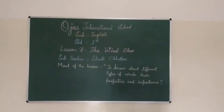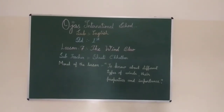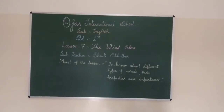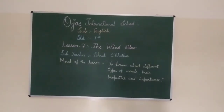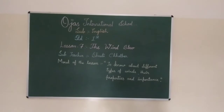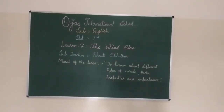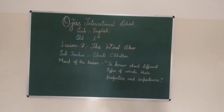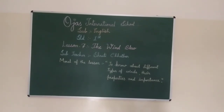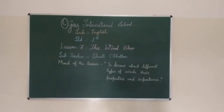Today in this video we will learn English lesson number 7, 'The Wind Blew.' Here, 'blew' is not a color. Here, B-L-E-W — 'blew' is the past tense form of 'blow,' B-L-O-W, blow.